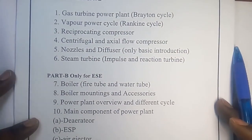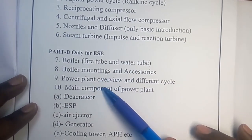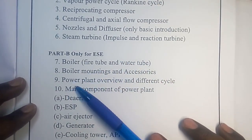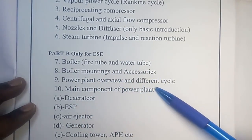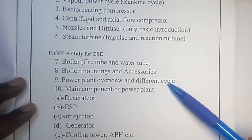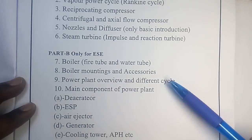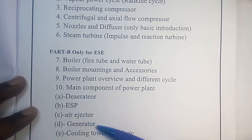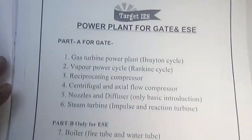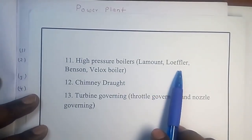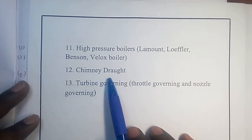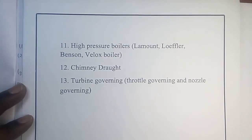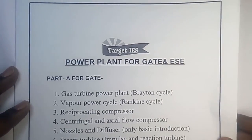Part B, which is only for engineering service examinations, covers: boilers including fire tube and water tube boilers, boiler mounting and accessories, power plant overview and different cycles like steam feed water cycle and flue gas cycle, power plant components like deaerator, electrostatic precipitator, air ejector, generator, cooling tower, air preheater, condenser, high pressure boilers like La Mont, Loeffler, Benson, and Bellox boilers, chimney or draft, and turbine governing including throttle governing and nozzle governing.